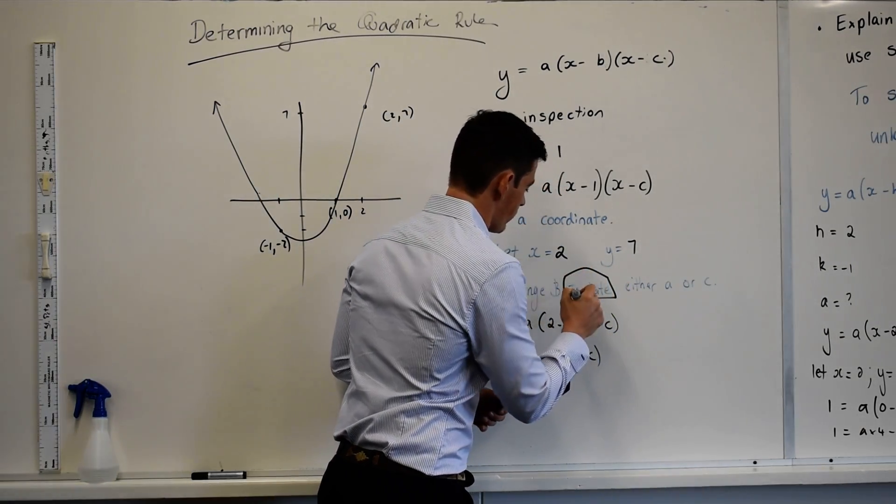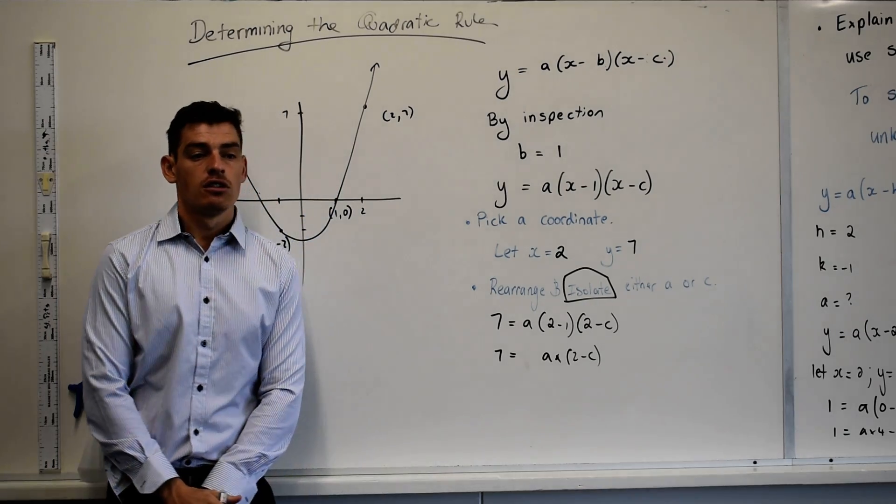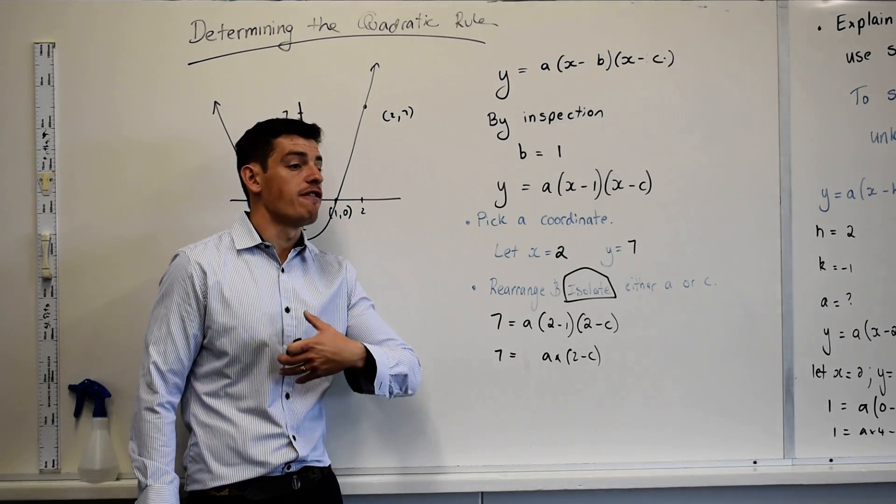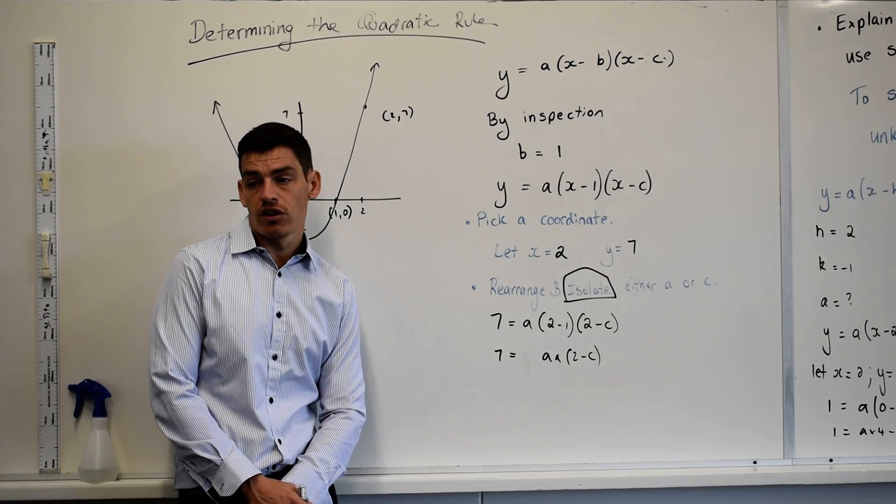What does this word mean? We should have heard it a few times. Get it by itself. Isolate, get it by itself. So I want a variable by itself on one side of the equation, correct?